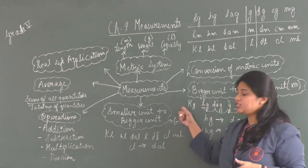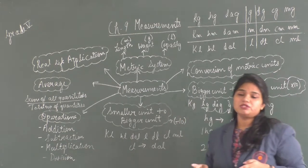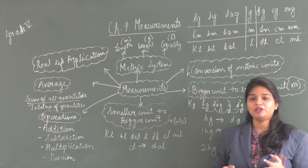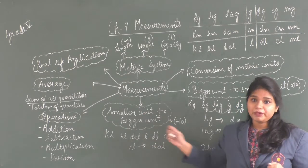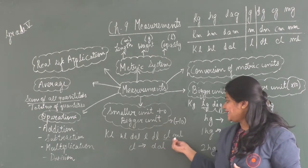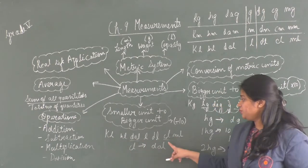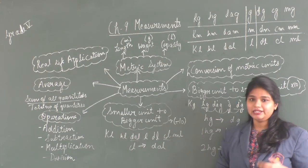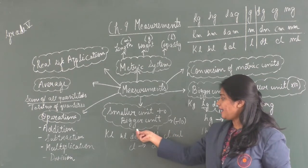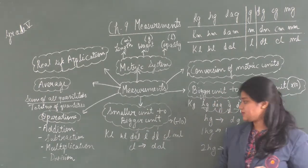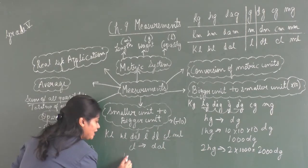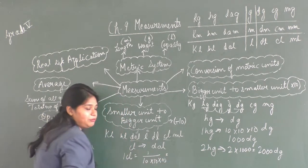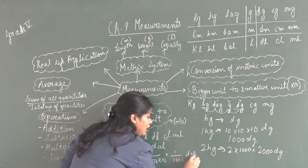Next, we learn how to convert a smaller unit into a bigger unit. Here we do the opposite — instead of multiplying, we divide by 10 for every jump from a smaller unit to a bigger unit. For example, I need to convert centiliter into decaliter. Centiliter is a smaller unit than decaliter. To go from centiliter to decaliter, we need to take 3 jumps. That means I will divide by 10 three times. So 1 centiliter equals 1 upon 10 × 10 × 10, which is 1/1000 decaliter.